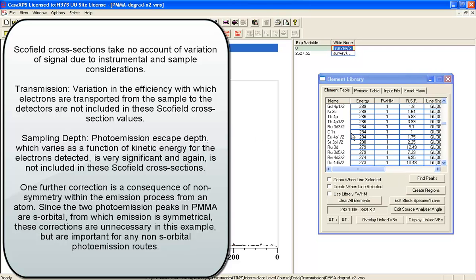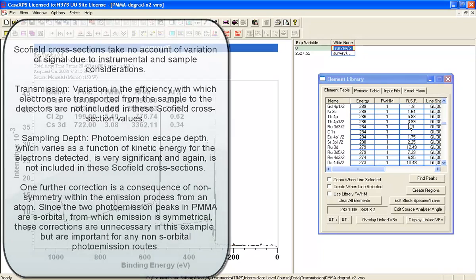Now I've got a Schofield library compiled from a set of relative transition probabilities relative to carbon 1S. You can see this is 1 here, and all these values have been calculated using Hartree calculations to work out transition probabilities. These have no knowledge about the instrument at all.